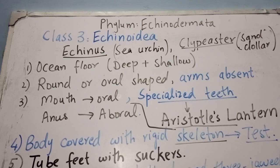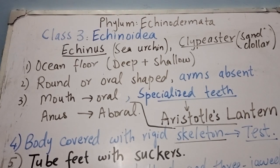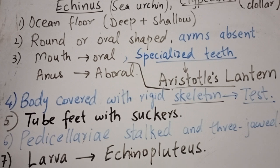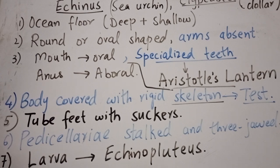The body of Echinoidea is covered by a rigid skeleton made of calcium carbonate, also known as the test. Locomotory organs are tube feet provided with suckers. Pedicellariae are present, used for capturing prey and cleaning the body; they are stalked and have three jaws. Development is indirect through a larva known as echinopluteus.